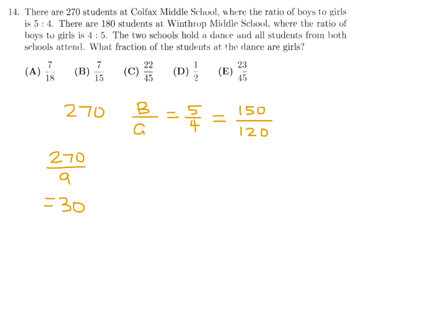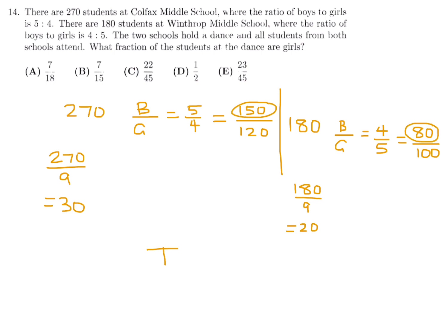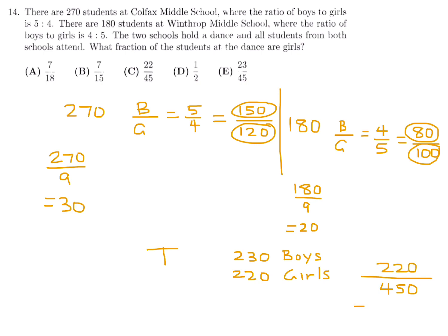At Winthrop Middle School, 180 students with a boys-to-girls ratio of 4:5. Since 180÷9=20, there are 80 boys and 100 girls. Combined totals: 230 boys and 220 girls, total 450 students. The fraction of girls is 220/450 = 22/45. Number 14, answer C.